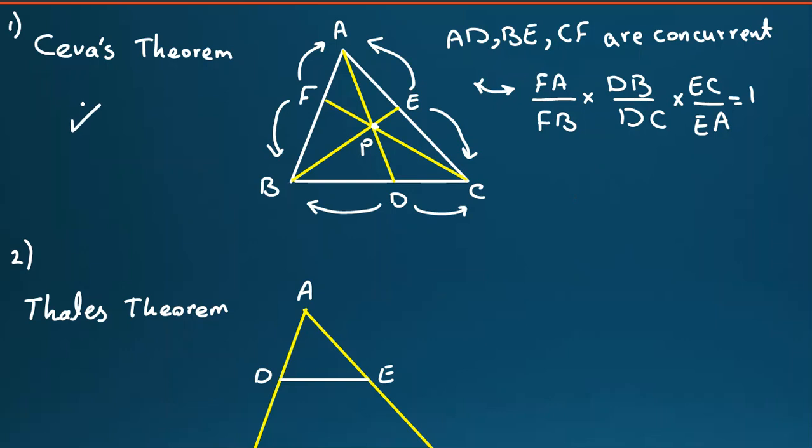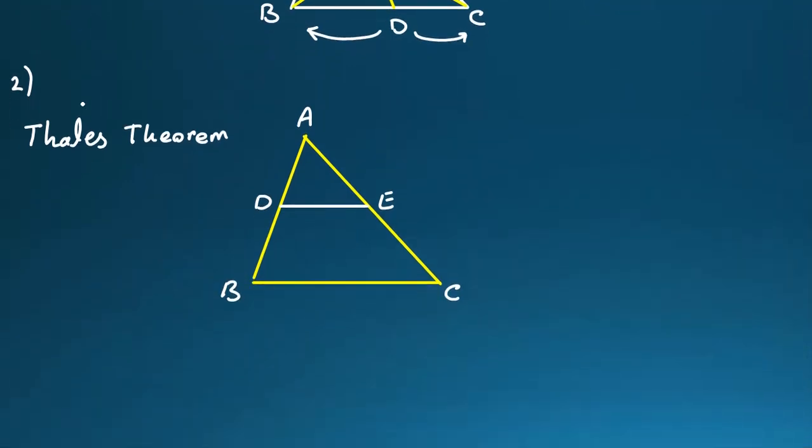The first one, Ceva's theorem, we said. The second one, Thales theorem. It says, for example, AD over this over this. You can prove it by similar triangles. AD over DB equal to AE over EC. It is famous.